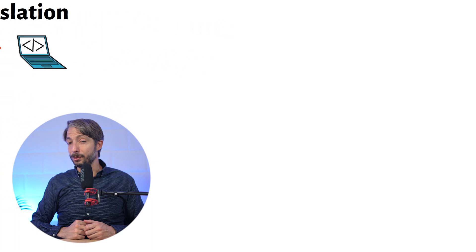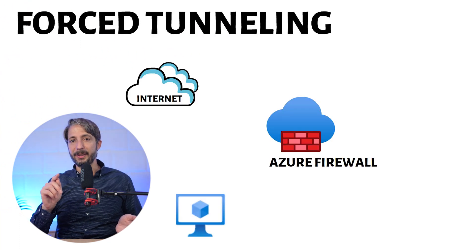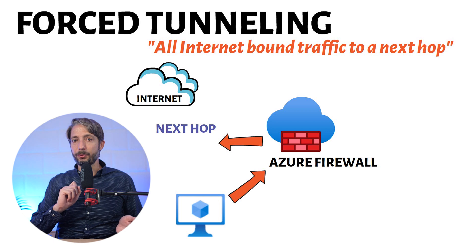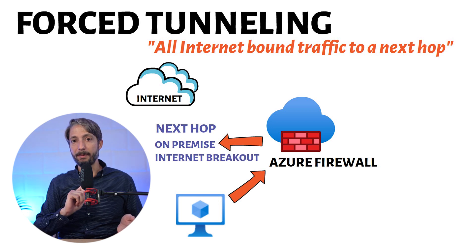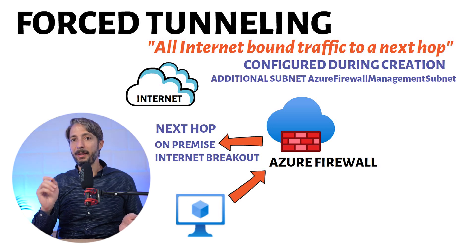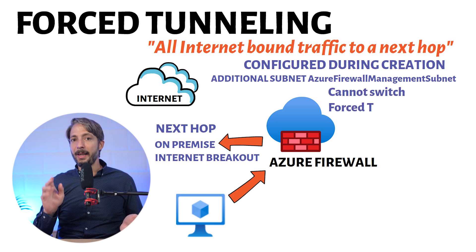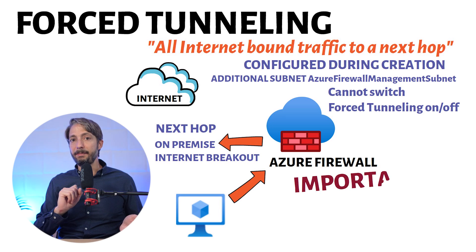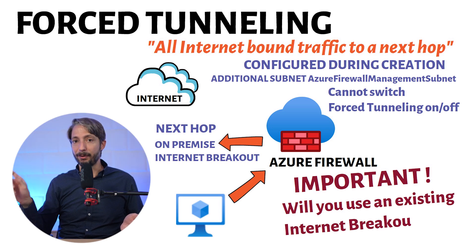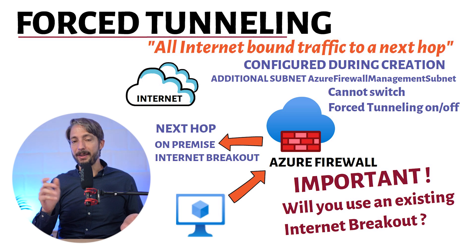The next concept is force tunneling. Force tunneling with Azure Firewall is the concept of routing all internet-bound traffic to a designated next hop instead of going directly to the public internet. This is useful if you want all outbound internet traffic from Azure to use an existing internet breakout on-premises. You have to keep in mind that force tunneling has to be configured at the creation of the Azure Firewall — it creates an extra subnet called the Azure Firewall Manager subnet for its operations. Once configured in this mode you cannot undo it and will have to recreate the resource. If you require an existing next-hop internet breakout for traffic from Azure, you must configure it in force tunneling mode.